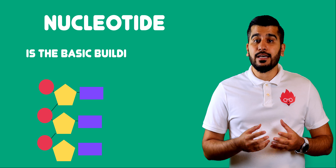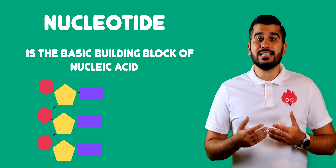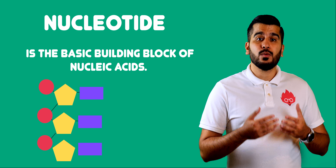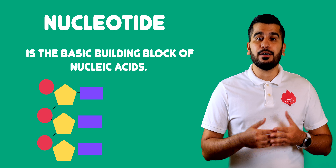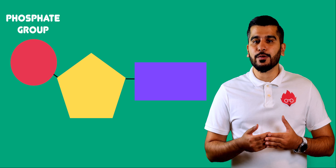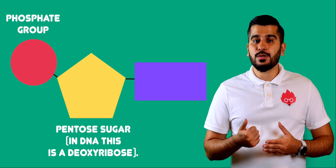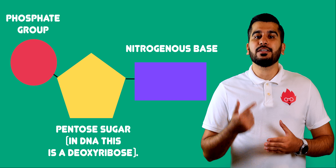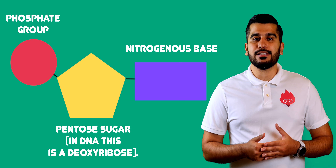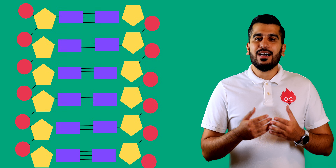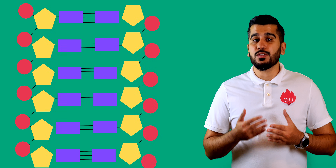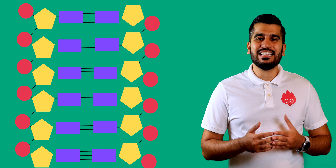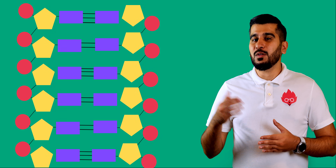A nucleotide is the repeating subunit, also known as a monomer, that makes up this polymer. It comprises a phosphate group, a pentose sugar, and a nitrogenous base. You can see how the nucleotides join together to form a DNA strand if you look here.